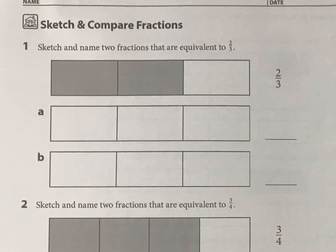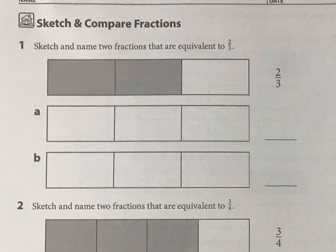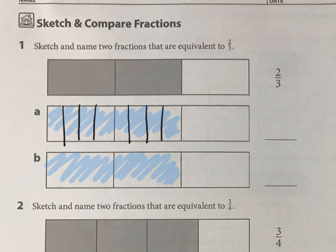First we're looking at sketching fractions equivalent to two-thirds. So your two-thirds part is going to stay the same, but we need to cut these pieces into smaller pieces. So maybe I'll do, for example, fourths. To do a fourth, I do half, then I cut my halves in half. And I'm going to do that for each of these thirds.